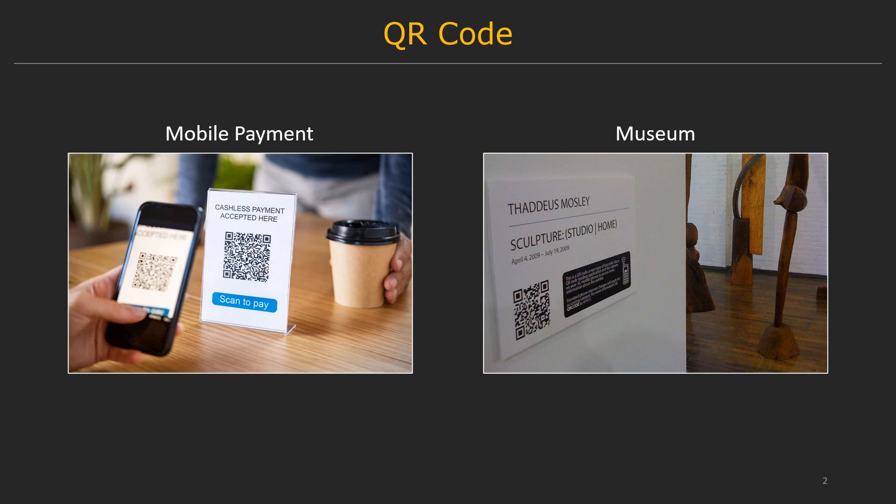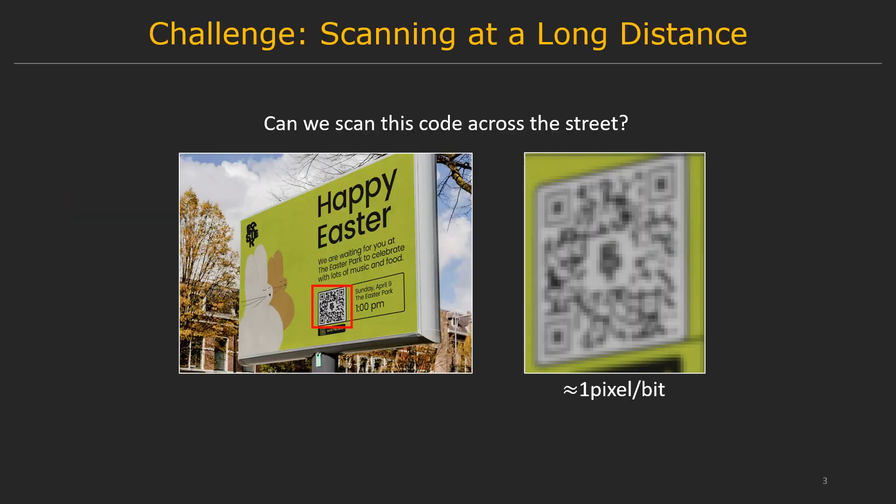QR codes offer a way of encoding information in structured visual patterns. They are widely used in daily life, for example in mobile payment and museum exhibitions. However, one known challenge for QR codes is scanning them at long distances. For example, a billboard QR code across the street may appear very small on your camera app, where each black or white square is comparable to a single pixel. The image looks very pixelated as a result.